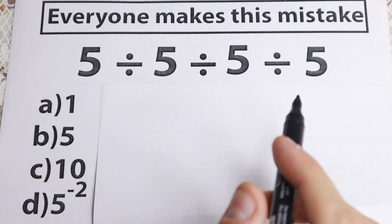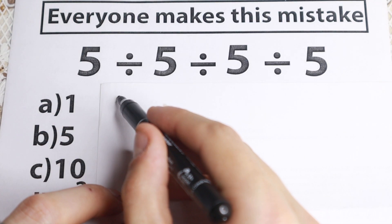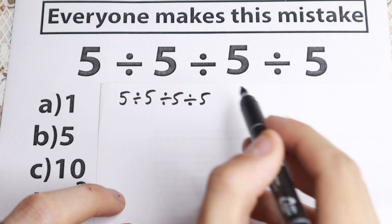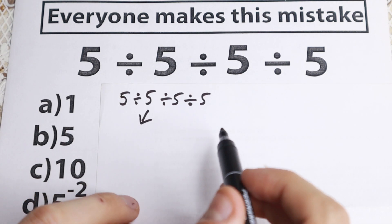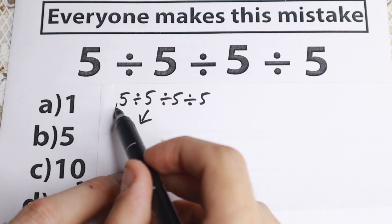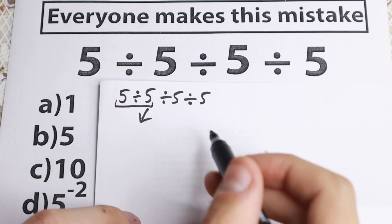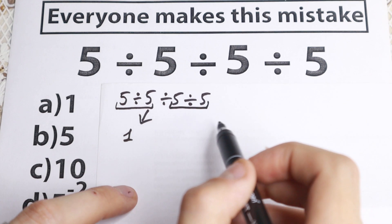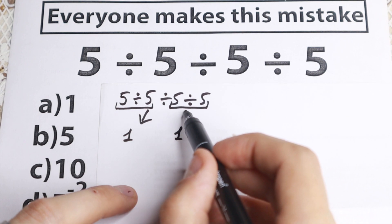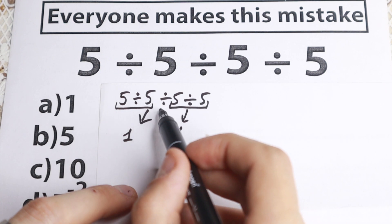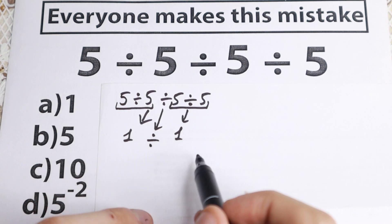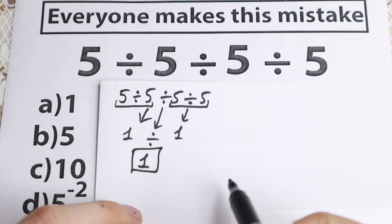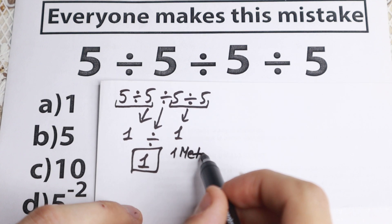Let's calculate it. We have 5 divided by 5, dividing by 5, and dividing by 5. In the first method: if we take the first pair, 5 divided by 5, we get 1. Then from the end, 5 divided by 5, we also get 1. We still have a division between them, so 1 divided by 1 equals 1. So this first method gives us an answer of 1.